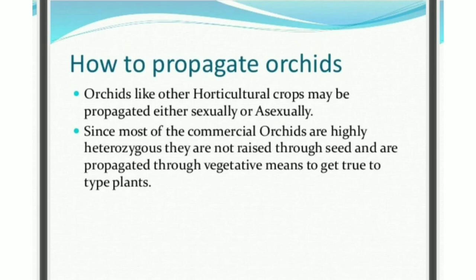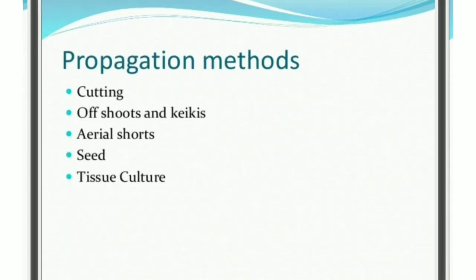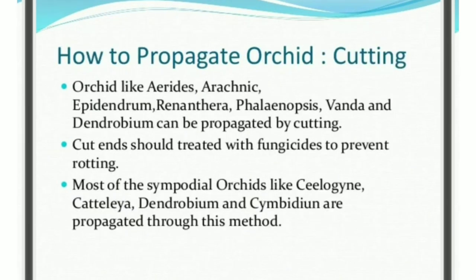How to propagate orchids? Orchids, like other horticultural crops, may be propagated either sexually or asexually. Since most commercial orchids are highly heterozygous, they are not raised through seed and are propagated through vegetative means to get true-to-type plants. Propagation methods include: cutting, offshoots and keikis, aerial shoots, seed, and tissue culture. Orchids like Arides, Arachnis, Epidendrum, Renanthera, Phalaenopsis, Vanda and Dendrobium can be propagated by cutting. Cut ends should be treated with fungicides to prevent rotting. Most sympodial orchids like Coelogyne, Cattleya, Dendrobium and Cymbidium are also propagated through this method.